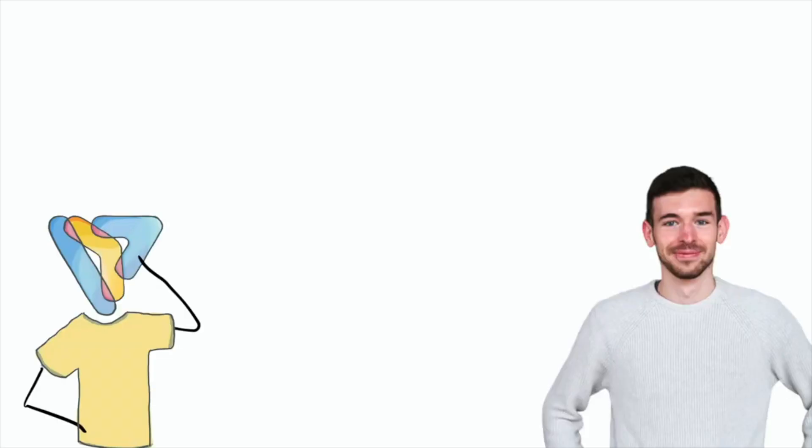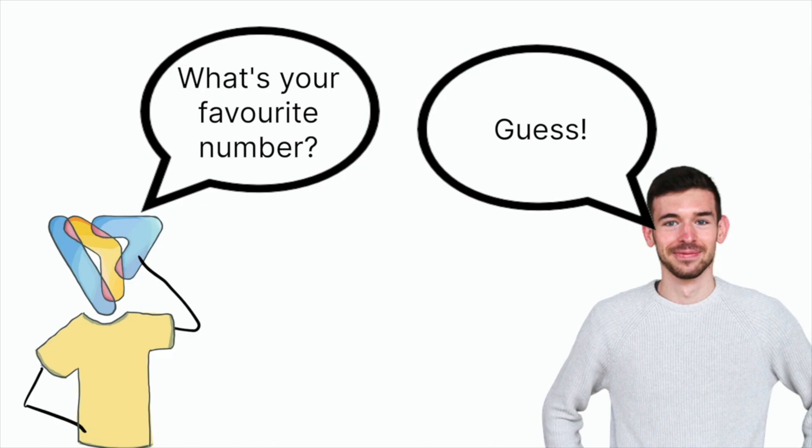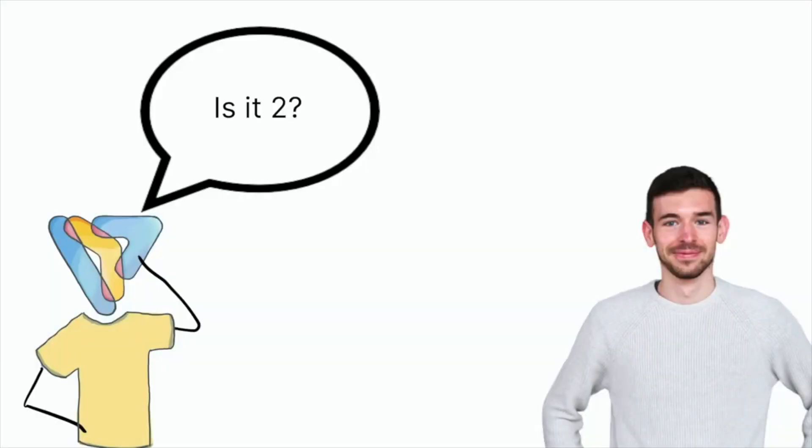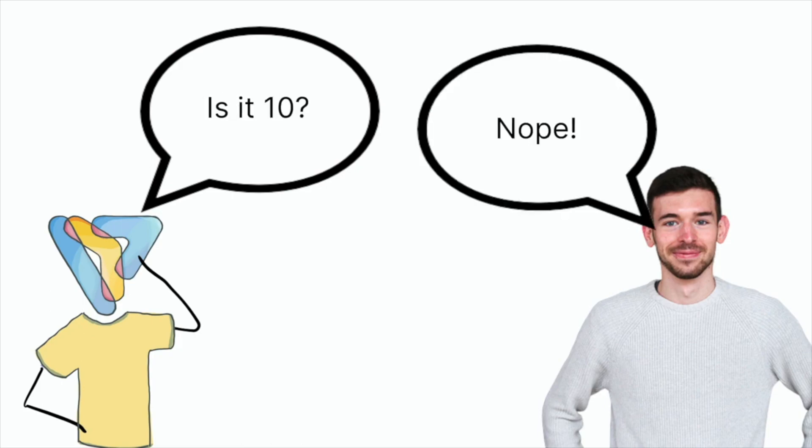Imagine that you want to try to guess what is my favorite number and the only information I'm going to give you is that it's an integer between 1 and 100. A possible strategy you can follow is ask me for possible solutions. Hey, is the number 2? And I will say no. Is the number 10? No.